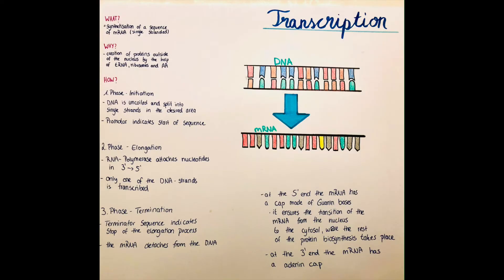So first of all, what is transcription? Transcription is the process in which a sequence of mRNA, so single-stranded genetic information, is made which is needed for the protein biosynthesis. And why is that done? To create proteins outside of the nucleus it is necessary to have mRNA, because this can leave the nucleus to the cytosol and there the proteins are generated by the help of tRNA, ribosomes, amino acids and also this mRNA.